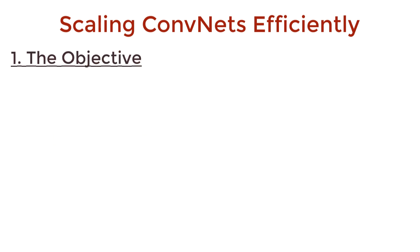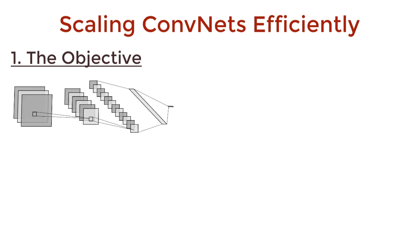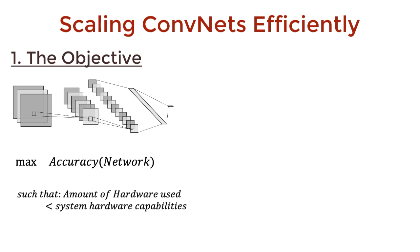Let's start by defining an objective. We are given a simple neural network architecture. Our goal is to scale this architecture such that we have the best performance, and our hardware should be able to handle this scaled architecture well. The network here is the base architecture we want to scale, like our dog and cat classifier. This network can be scaled in three ways, like we mentioned before.